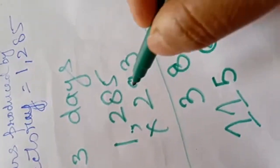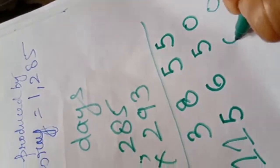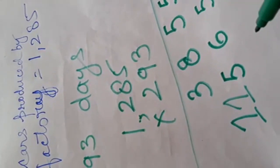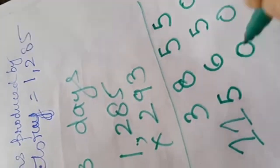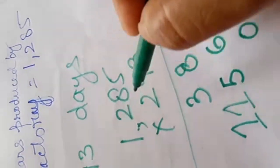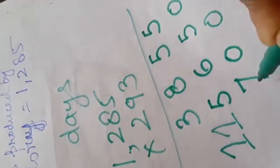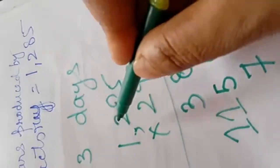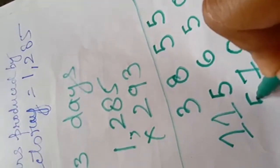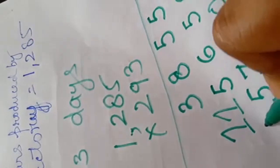Now, come to the 200 multiplication. I will put here double 0. Now, multiplying: 2 times 5 is 10, carry over 1. 2 times 8 is 16 plus 1 is 17, carry over 1. 2 times 2 is 4 plus 1 is 5. 2 times 1 is 2.